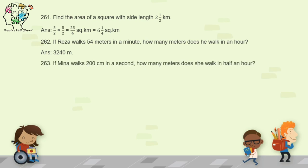Question 263: if Mina walks 200 centimeters per second, how many meters does she walk in half an hour? Half an hour is 1,800 seconds. Multiply 200 by 1,800 to get the distance in centimeters, then divide by 100 to convert to meters. The answer is 3,600 meters.